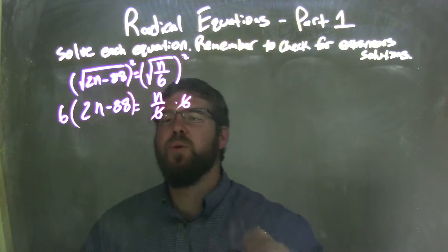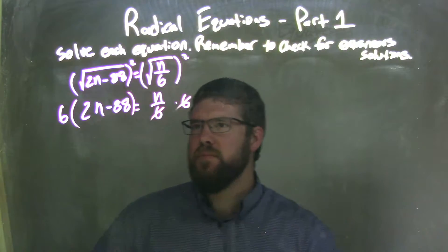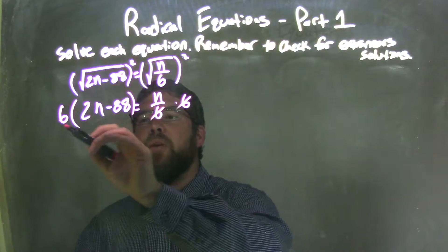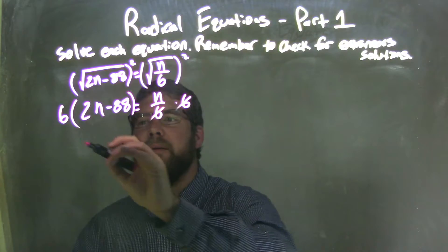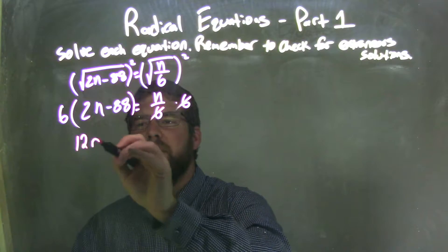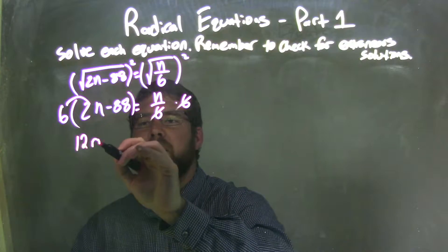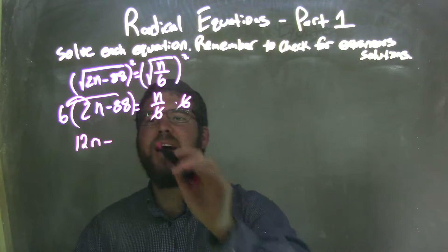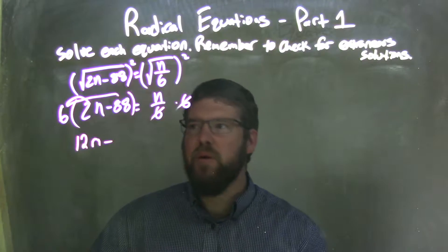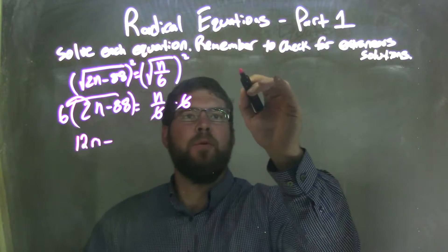So, now these 6s will eliminate, leaving me with 6 times 2n minus 88. 6 times 2n is 12n, right? I'm going to distribute, fantastic. Minus 6 times 88, what's that? Well, we've got to solve that, right? So, I'm going to do it right here.